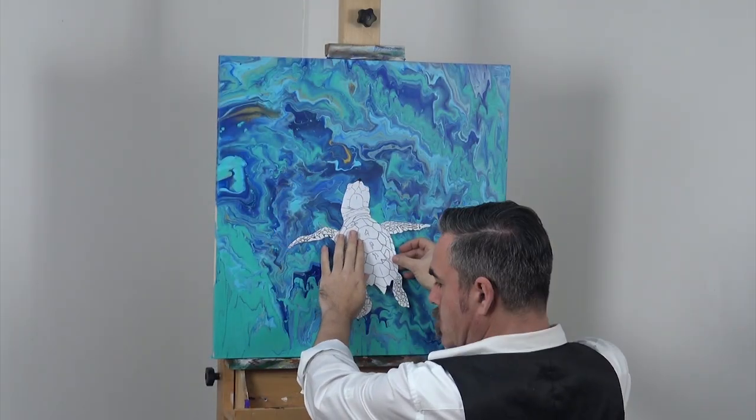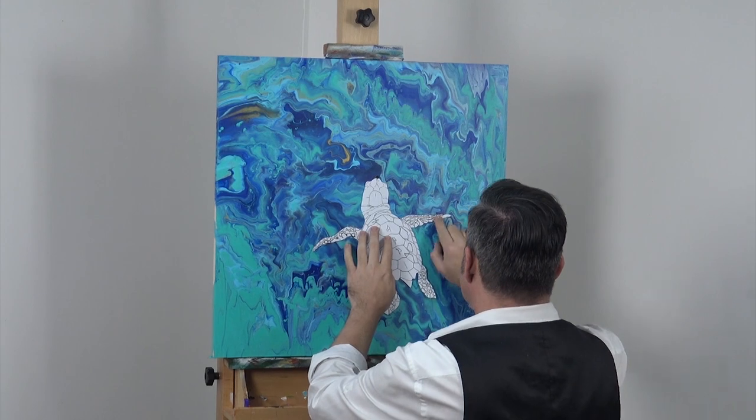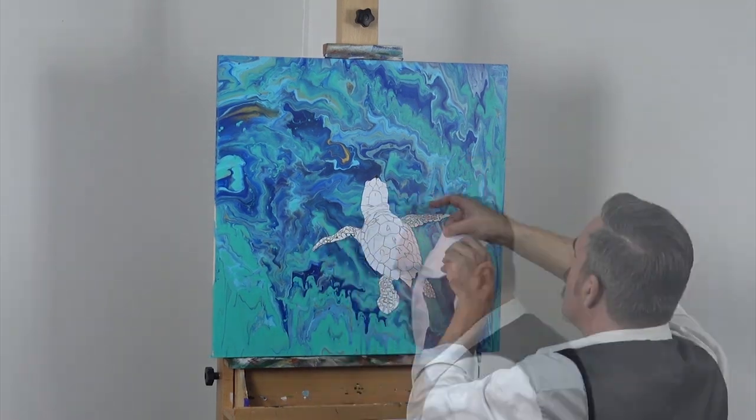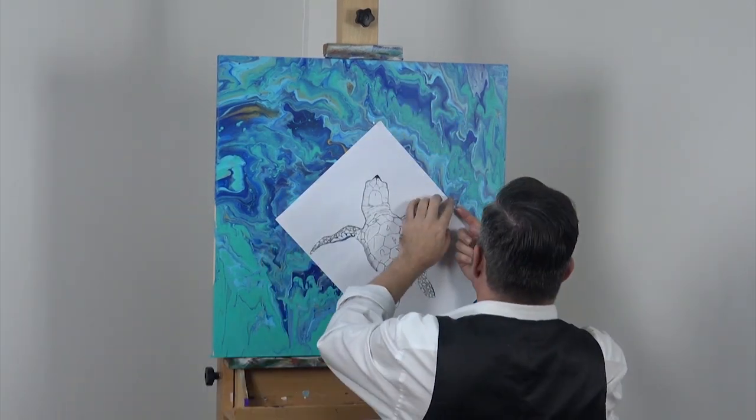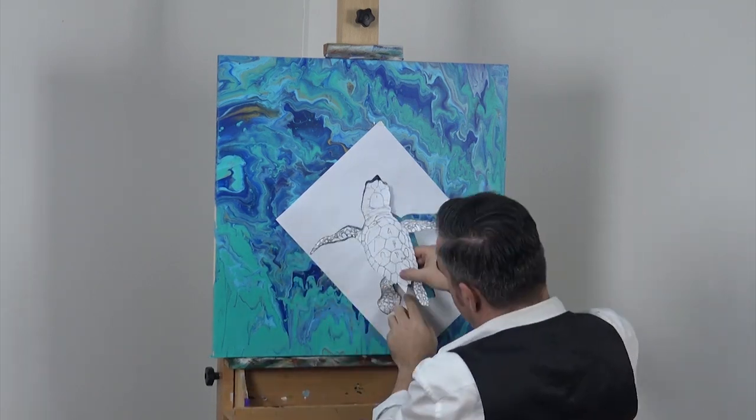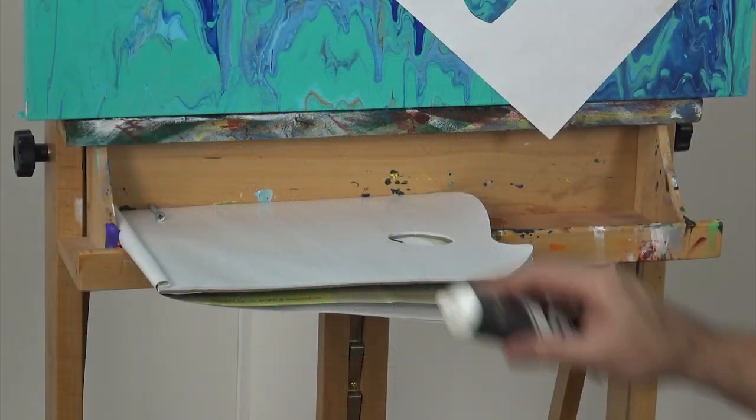Place the positive or cutout part of your stencil where you think it looks best on the painting. Then put the stencil over the cutout and remove the cutout. Doing this helps you choose a position that works best with your background.